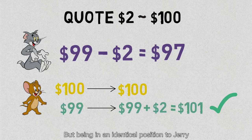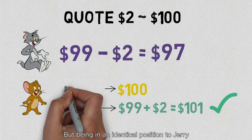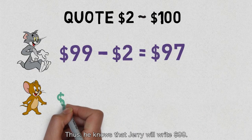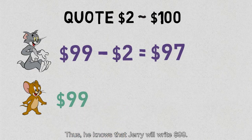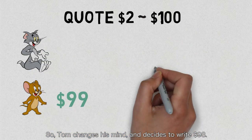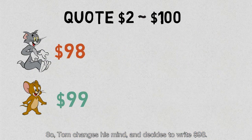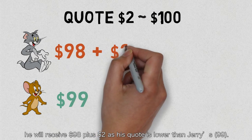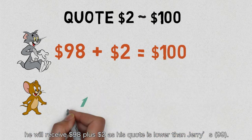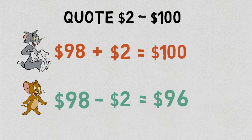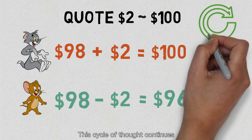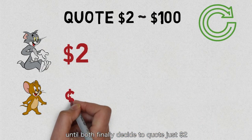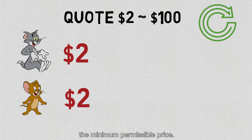But being in an identical position as Jerry, Tom thinks in exactly the same way as Jerry. Thus, he knows that Jerry will write 99 dollars. So Tom changes his mind and decides to write 98, because if Jerry wrote 99, he will receive 98 plus 2 as his quote is lower than Jerry's. The cycle of thoughts continues until both finally decide to quote just two dollars, the minimum permissible price.